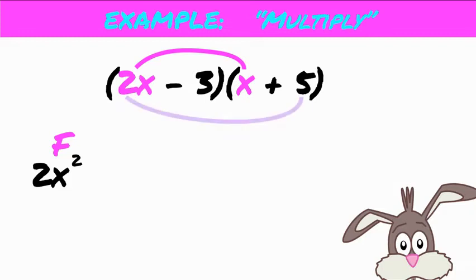Then what we do is we grab these two on the outside, the hot pink on the far left and the black 5 on the far right, and we multiply those. When we do 2x times 5 on the outsides, we'll get positive 10x.